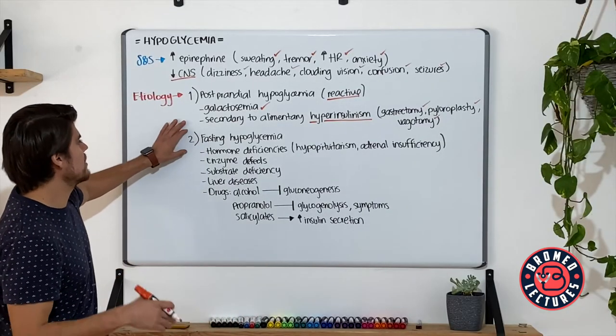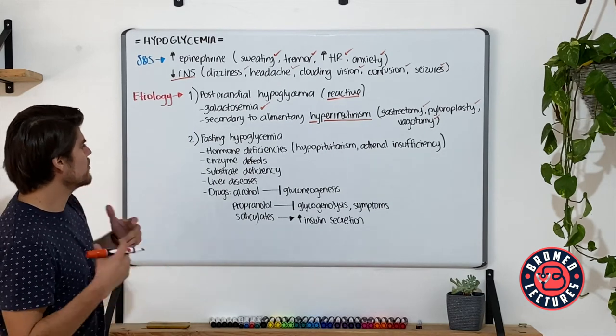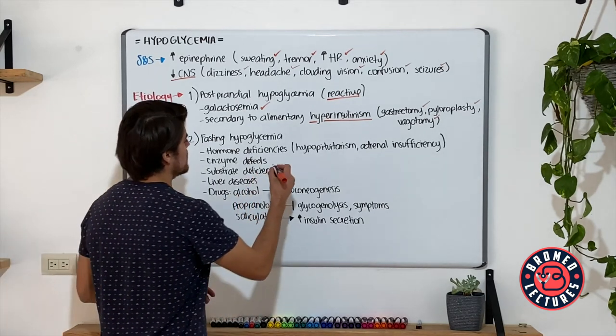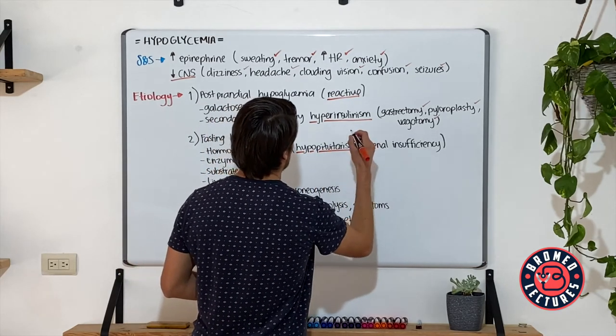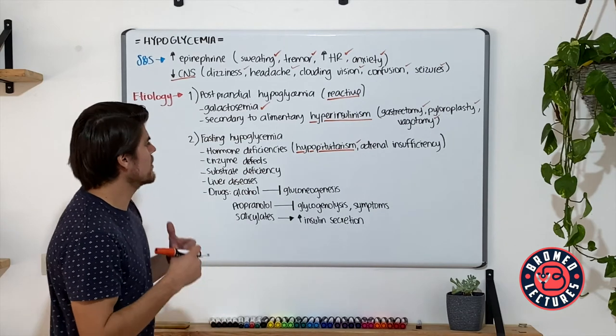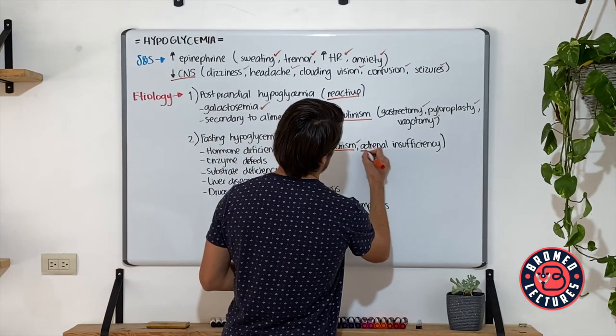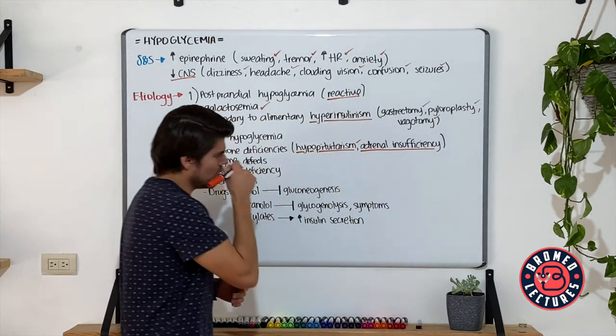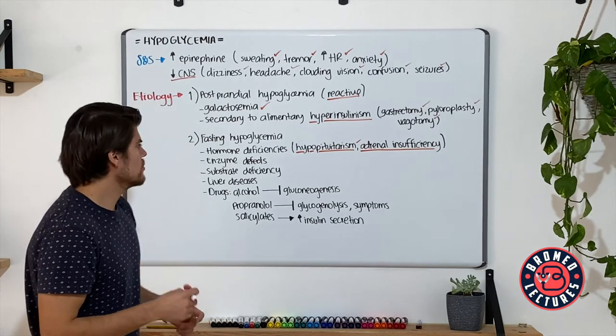We also have patients that develop hypoglycemic episodes during fasting. For these, you should consider hormonal deficiencies such as hypopituitarism. These are patients that lack growth hormone, ACTH. So these patients are not able to keep up with glucose demands. Also, adrenal insufficiency patients cannot develop a proper response during stress episodes due to the lack of cortisol.